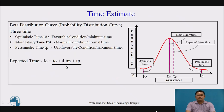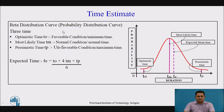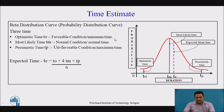The time estimates in PERT: with the help of the beta distribution curve, we define three time estimates. If we consider a single activity, it can be completed in the optimistic time — the condition where favorable conditions exist and it is the minimum time required for the completion of a particular activity.